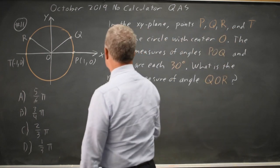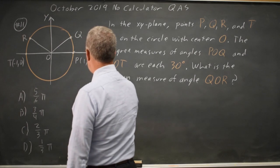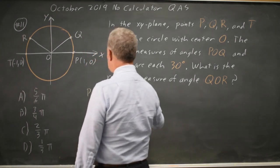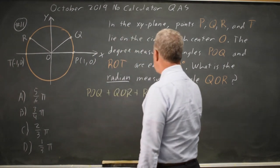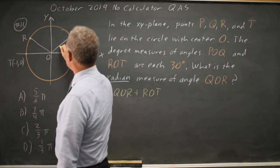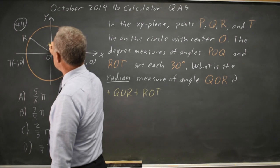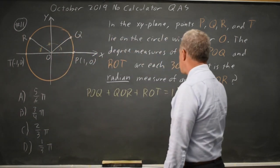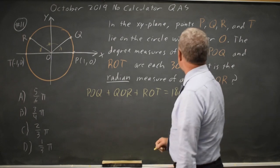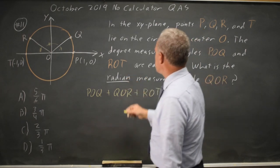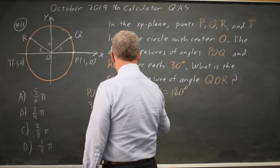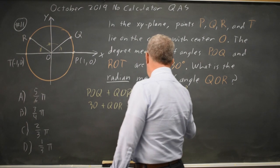So we see that POQ plus QOR plus ROT, that's this angle plus this angle plus this angle, forms this triangle which is 180 degrees and we're given that POQ and ROT are each 30. So 30 plus QOR plus another 30 equals 180.